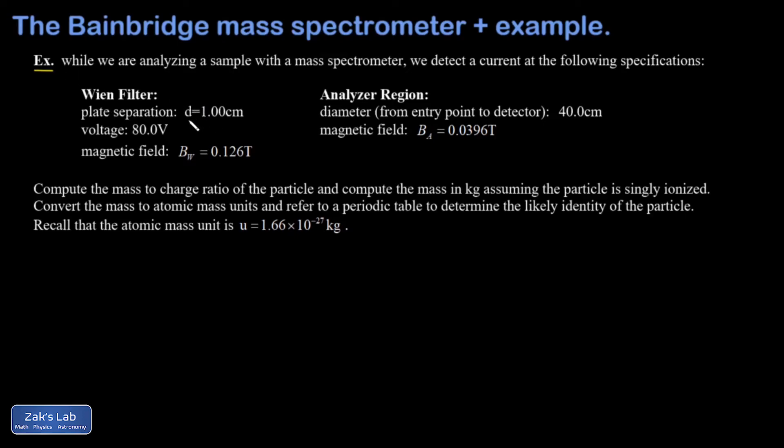We're told for the Wien filter that there's a plate separation of one centimeter, that is between the charge plates that exert the electric field. We have a voltage of 80 volts across those plates. And we have a magnetic field magnitude of BW equals 0.126 Tesla.